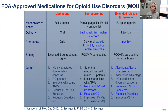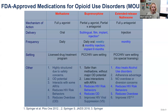Buprenorphine is a partial agonist available in sublingual films, sublingual tablets, implants, and injectables. The most common formulation in the U.S. is the daily sublingual method, but we're seeing more injection of the long-acting forms available in various clinics and pharmacies. It can be provided in your HIV clinic — I have an opioid treatment clinic embedded within our HIV clinic at UAB. This medication is safer than methadone, does not have the overdose potential, has less interactions with ARTs, reduces HIV risk behaviors and overdose, and has been shown to improve viral load suppression.